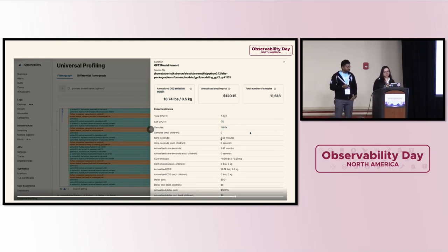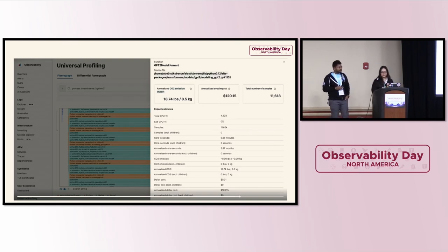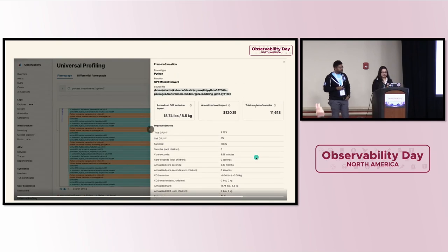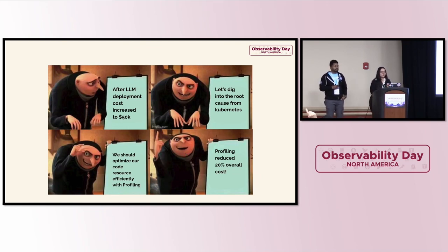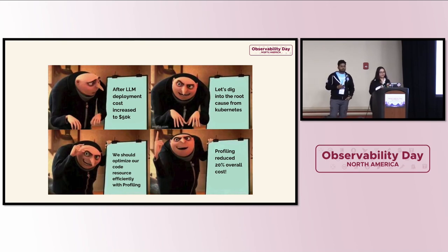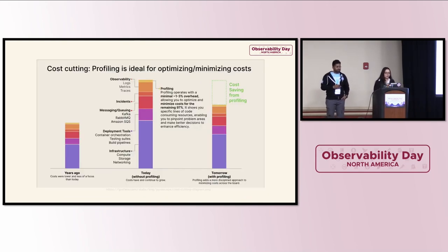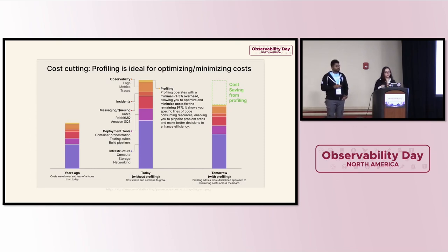This shows carbon emission: 18.74 pounds, with an annual cost of around $120, and 11,000 samples. Total CPU is 4.22% for this particular trace. These traces are running on Locust — we generated some load testing using Locust. Since LLMs are pretty huge, they can cost around $50K or more. Since profiling has been introduced, you can dig deeper and reduce costs, and we've seen it has reduced a lot of cost for applications.